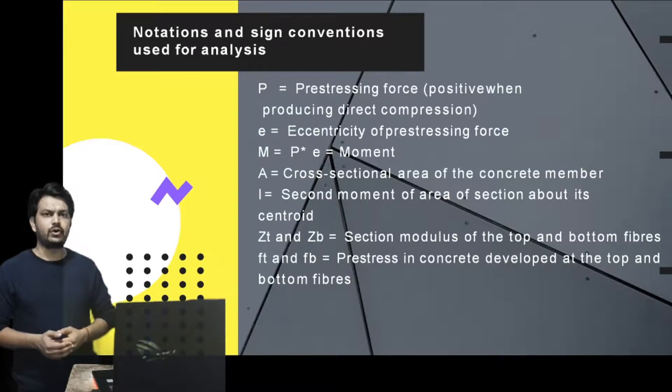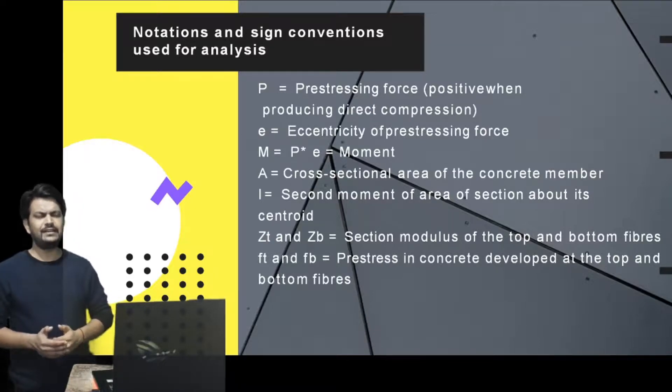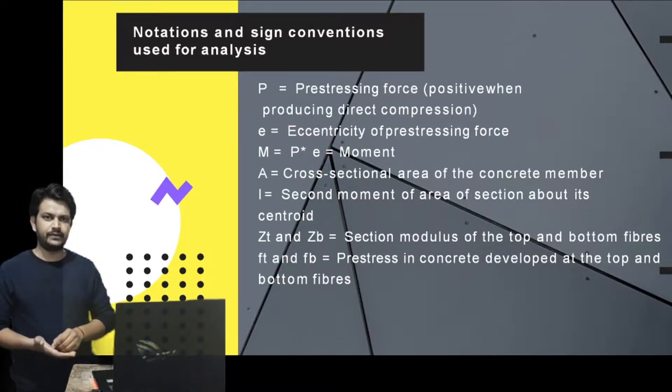But if we consider an I-section or T-section, the neutral axis doesn't lie at the middle of the depth, it lies somewhere asymmetrically. So the distance of neutral axis from bottom will be different from top, that is YT and YB will be different, and hence the section modulus will be different.